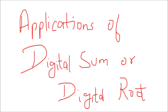Now coming to the application part — what is the need to calculate the digital sum or digital root? It has many applications. One application is checking whether a given number is a perfect square or not. If you know the digital sum of a number, you can tell at a glance whether it is a perfect square or not. There are further applications during long multiplication, division, addition, and subtraction. I have made a separate video specifically on checking whether a given number is a perfect square using digital root, which is a continuation of this video.